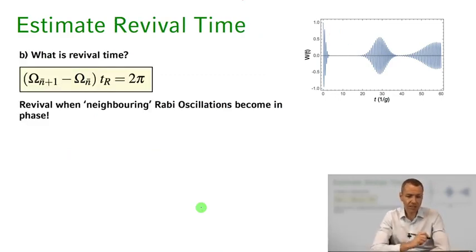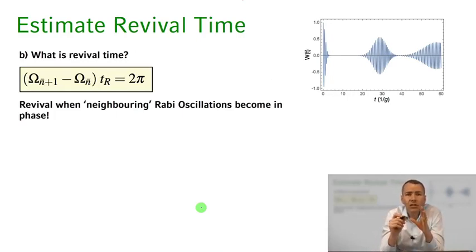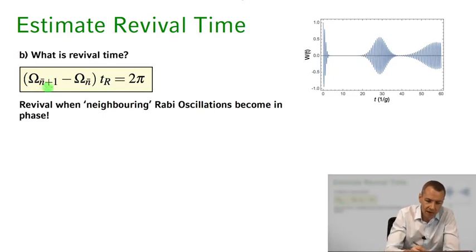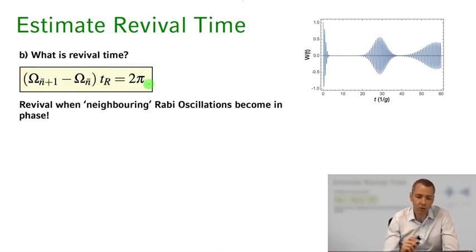Now let's estimate the revival time. The revival of the Rabi oscillations takes place when all the neighboring Rabi oscillations come back in phase and add up constructively. That happens when (omega_{n-bar+1} minus omega_{n-bar}) times the revival time is on the order of 2pi, so the different phase factors for neighboring Rabi frequencies can add up constructively again.